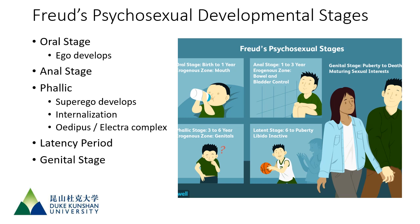The next stage is the latency period, spanning from age six to eleven. This is a time of relative calm where sexual desires are pretty much hidden away. This is the period when kids would say things like, 'Eww, girls are gross!' or 'Eww, boys are gross!' If they see their parents kissing, they'll say 'Eww, please, I don't want to see that.' These are the kids in the latency period.